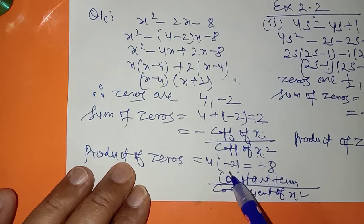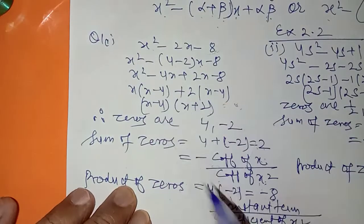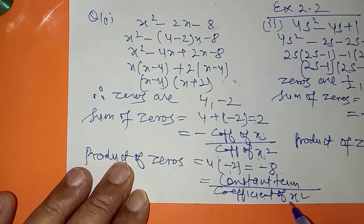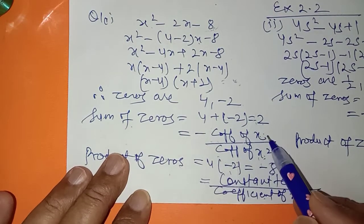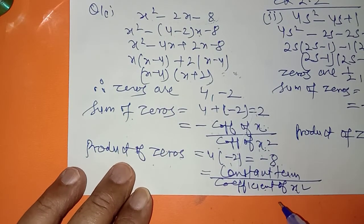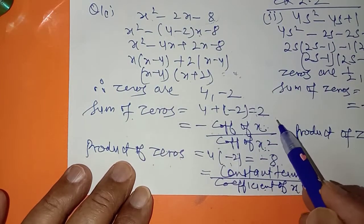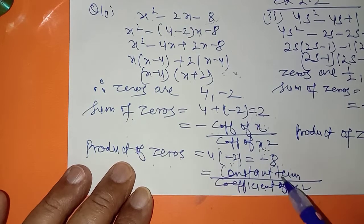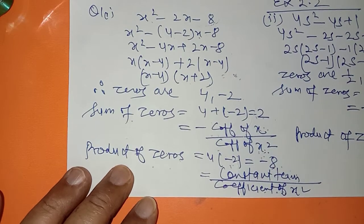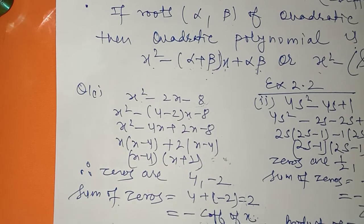Product of the zeros: multiply 4 and minus 2 to get minus 8. This should equal c upon a, that is minus 8 upon 1, which is minus 8. So product of the zeros equals constant term upon coefficient of x squared. Sum of the zeros equals minus coefficient of x upon coefficient of x squared — verified. Product of zeros equals constant term upon coefficient of x squared — verified. Multiply the zeros and compare with c upon a, where c upon a means constant term upon coefficient of x squared.